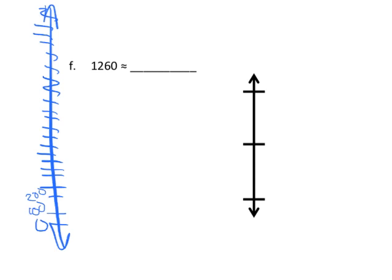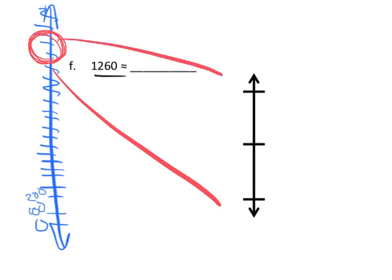The idea is this number right here, 1260, has to live somewhere on this number line, and really what we want to know is between what two hundreds, what interval, so that we can then map it on this zoomed-in vertical number line. Since we're rounding to the nearest hundred, it's going to be between 1200 and 1300. In other words, one thousand two hundred and one thousand three hundred.